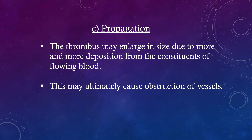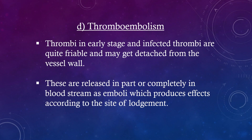Propagation: The thrombus may enlarge in size due to more and more deposition from the constituents of flowing blood, which may ultimately cause obstruction of vessels. Thromboembolism: Thrombus in early stage and infected thrombus are quite friable and may get detached from the vessel wall, released partly or completely into the bloodstream as emboli, producing effects according to the site of lodgement.